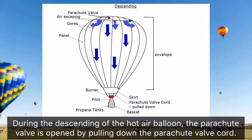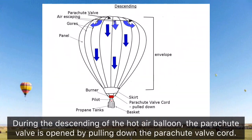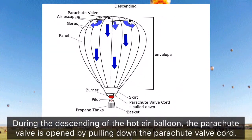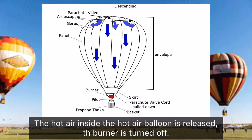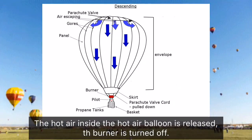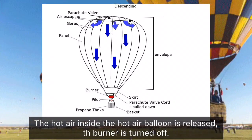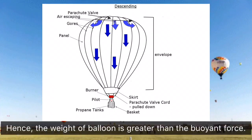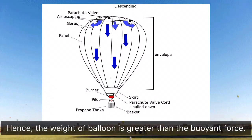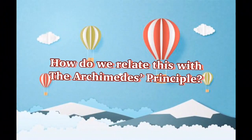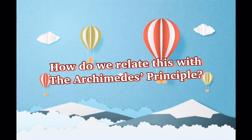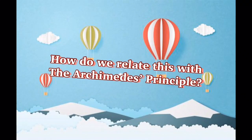During the descending of the hot air balloon, the parachute valve is opened by pulling down the parachute valve cord. The hot air inside the balloon is released and the burner is turned off. Hence the weight of the balloon is greater than the buoyant force. Now, how do we relate this with Archimedes' principle?